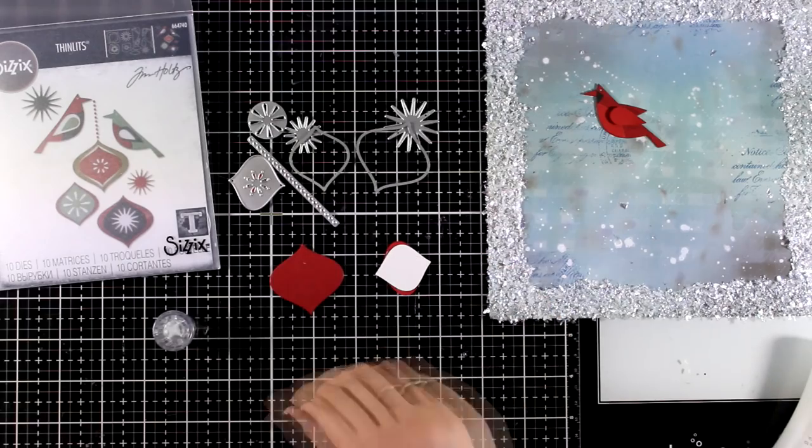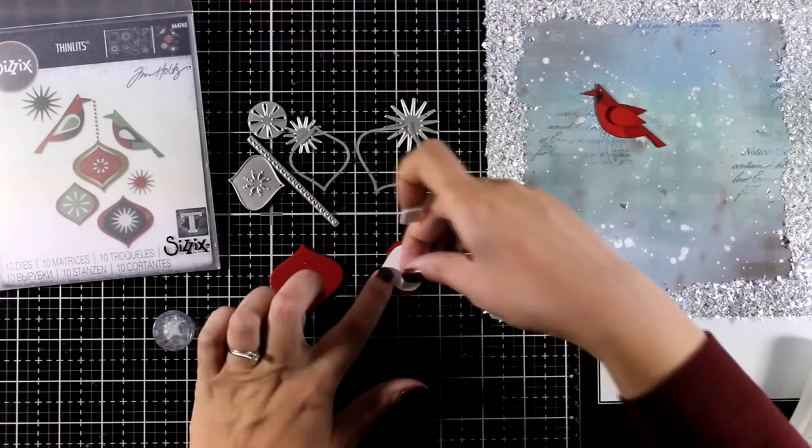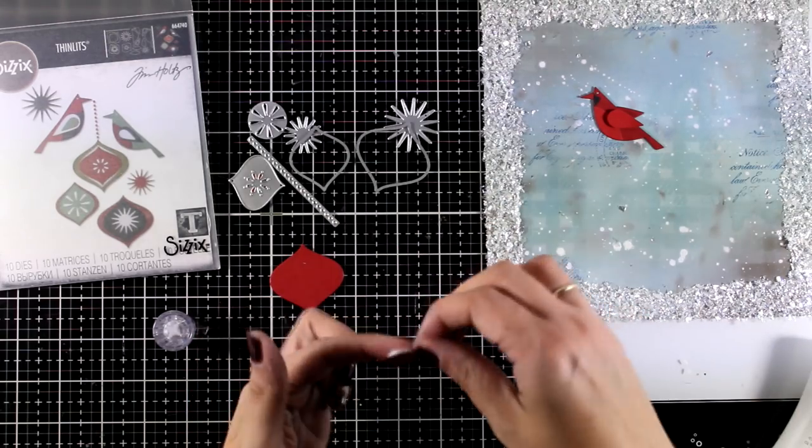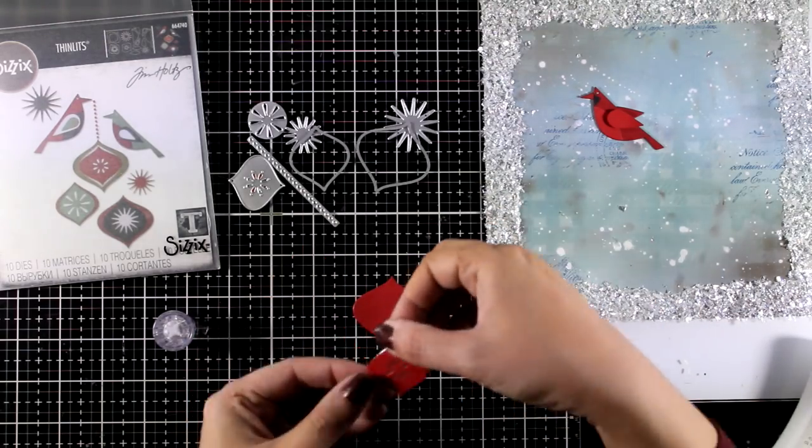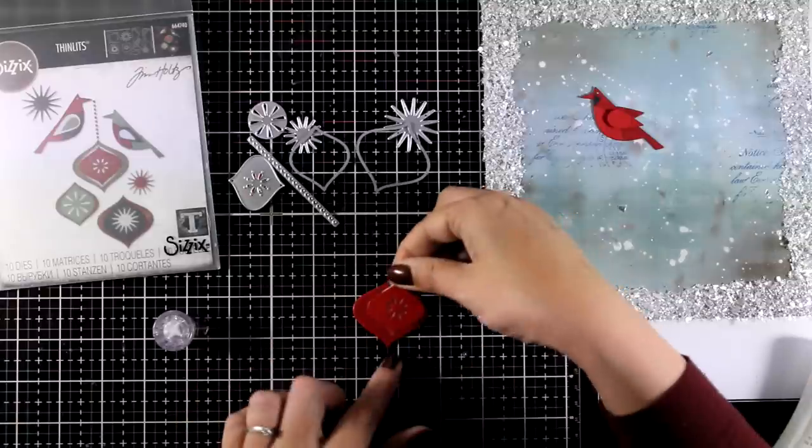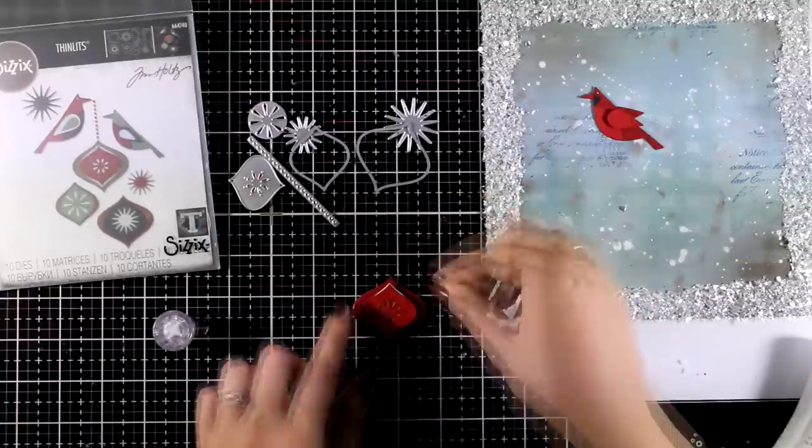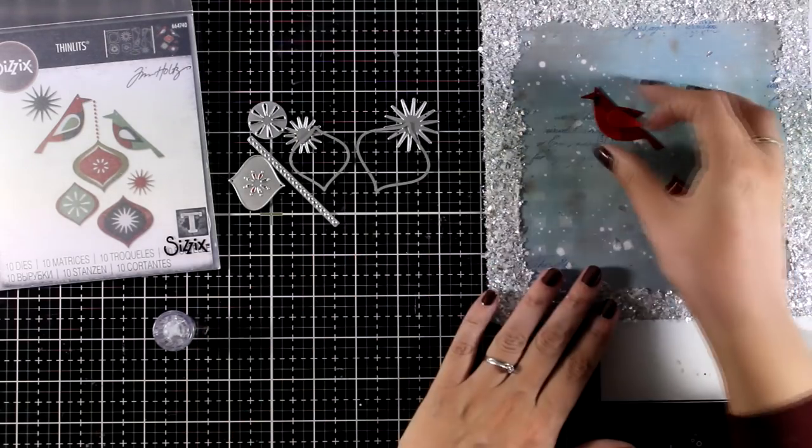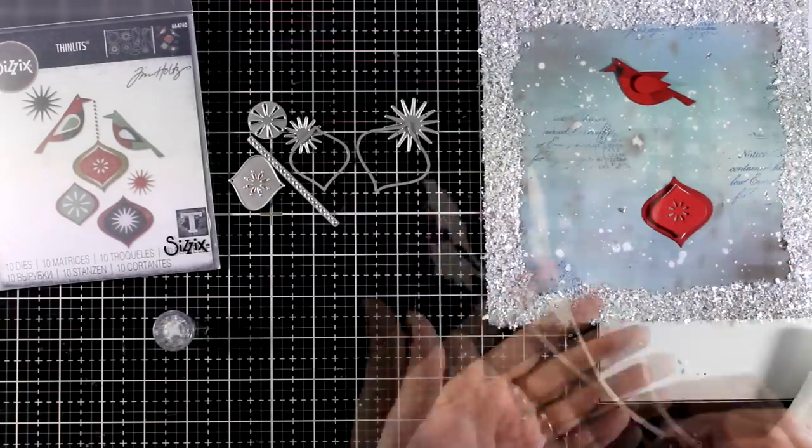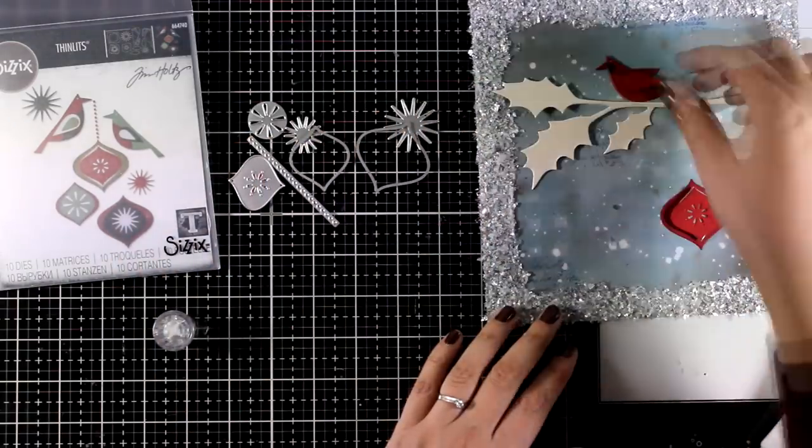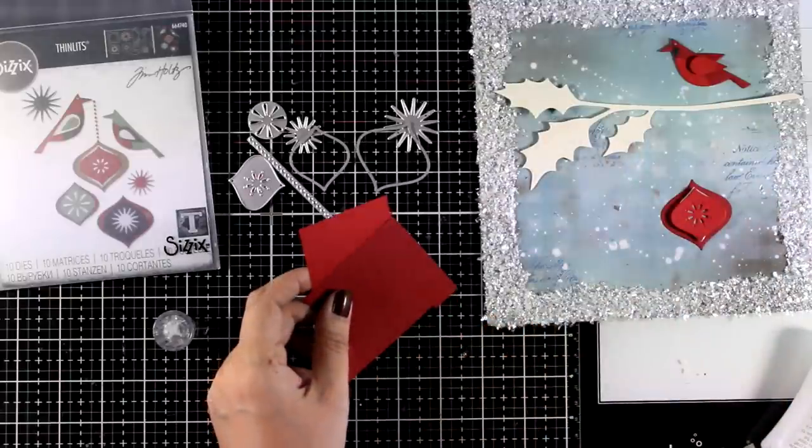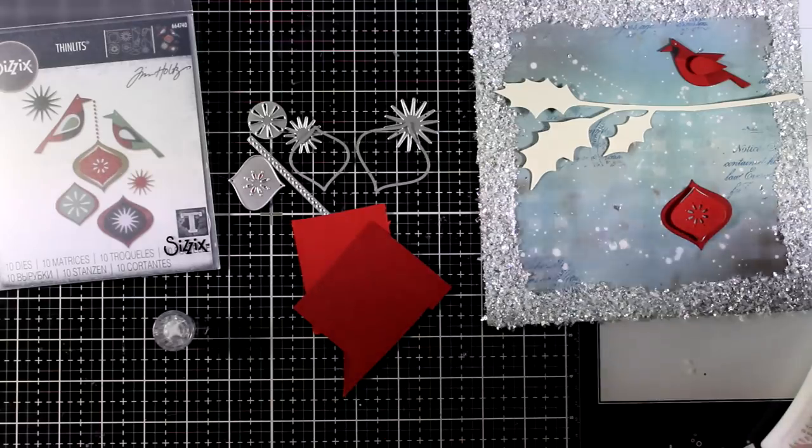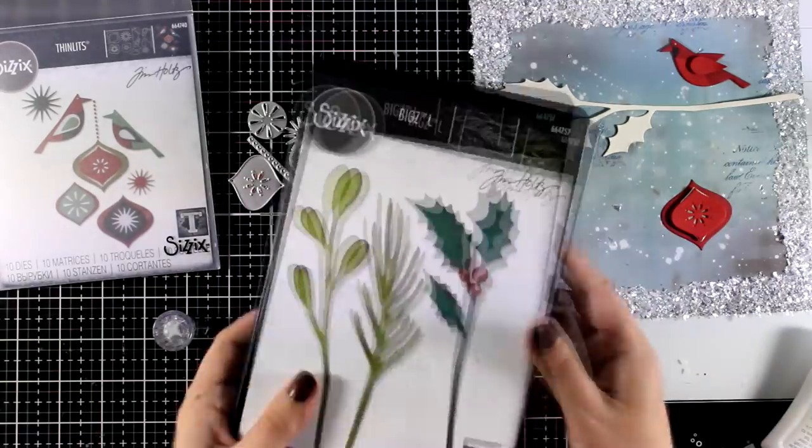Now mix and match all those different die cuts. There is no correct way of how we can put them together. I do want to add some dimension, so that's why I'm using foam squares at the back, and then I'm going to stick that on the other red cardstock. Now the one that I have at the back is slightly darker, so it is going to give the hint of a shade. The idea is to have the birdie holding the ornament and I'm going to give him this branch to sit on, but I want to create a visual triangle with red, so again I'm going to use the same cardstock that I used for the bird and the ornament and I'm going to die cut berries.